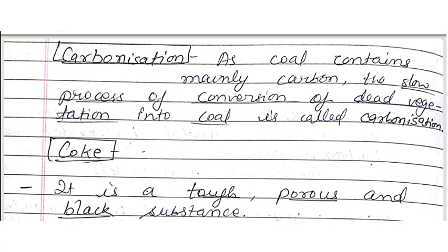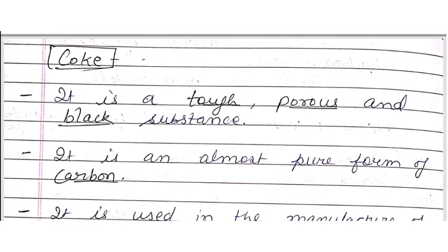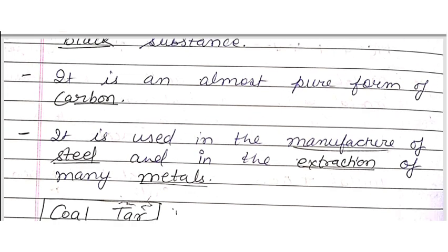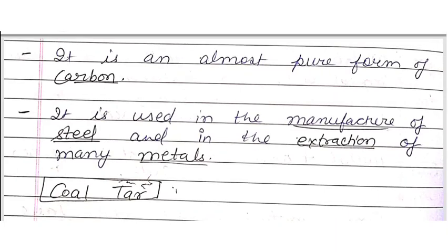When the plants die, they convert into coal — this process is called carbonization. What is coke? It is a tough, porous and black substance. It is very hard, has many pores, and is dark. It is an almost pure form of carbon.